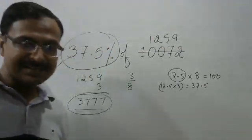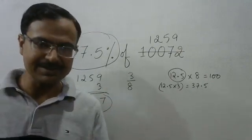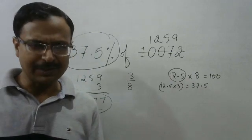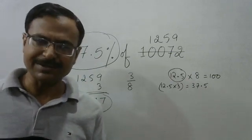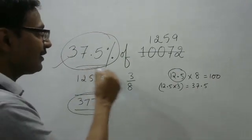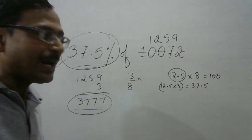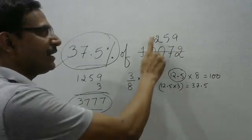That's it - 3-4 seconds is the time required. So 37.5% of any number is actually 3/8 of that number. That is why I have cancelled this by 8 and got 1259, and then multiplied by 3 to get to the final answer, 3777.